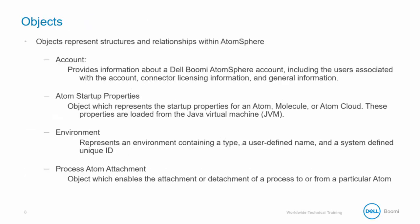The objects represent structures and relationships within AtomSphere. For example, account provides information on the account like users, licensing, and general information. Atom startup properties will show the startup properties for that runtime. Environment will show information containing the type, user-defined name, and a system-defined unique ID for the environment. Process Atom attachment enables the attachment or detachment of a process to or from a particular atom. These are not all of the objects available — we will see a full list in the following slides.